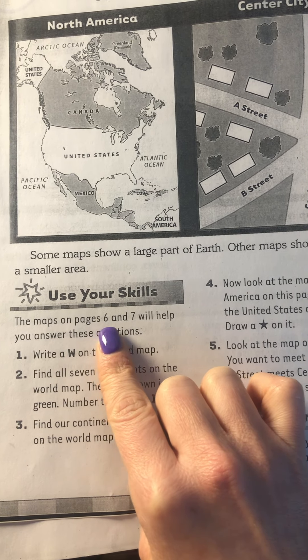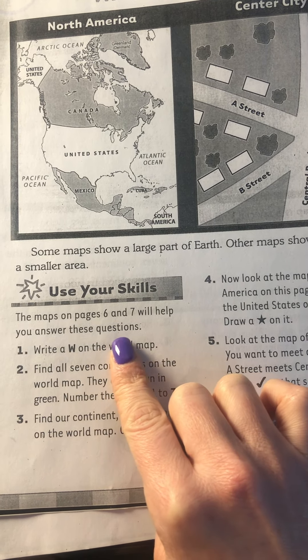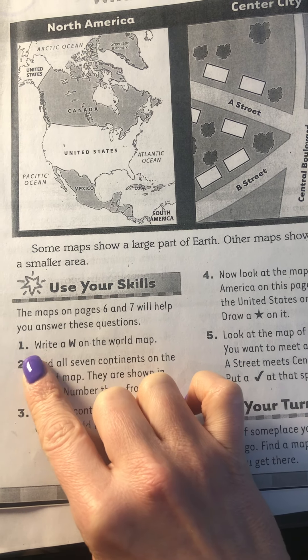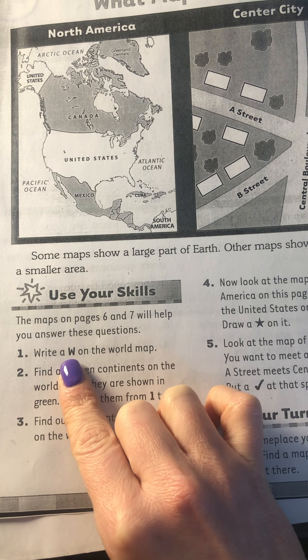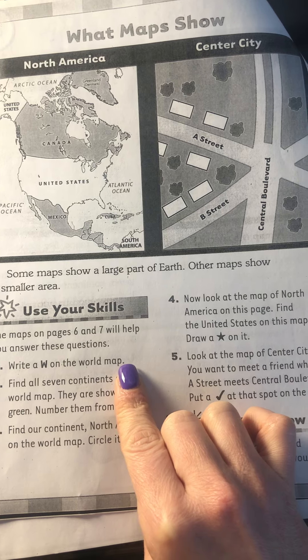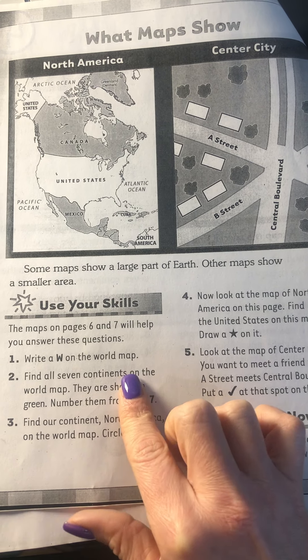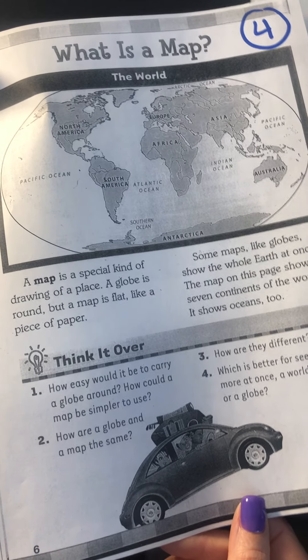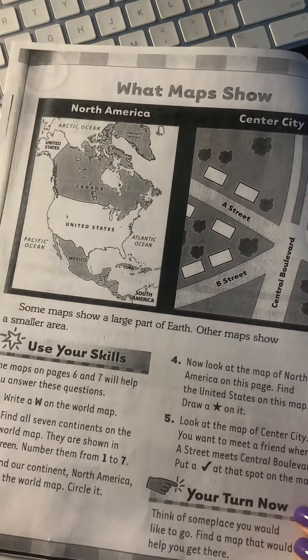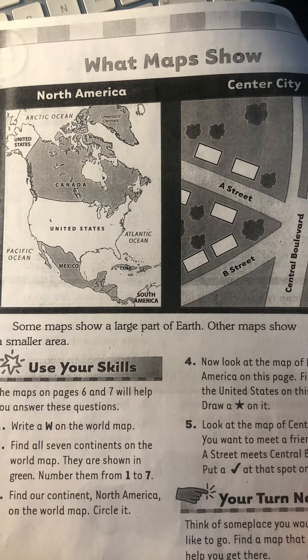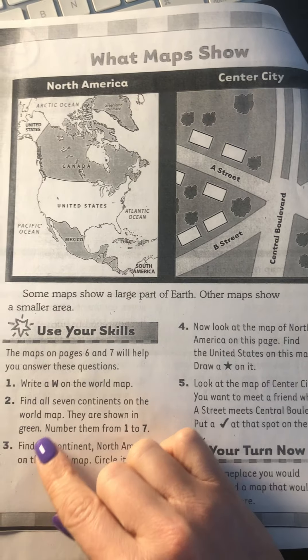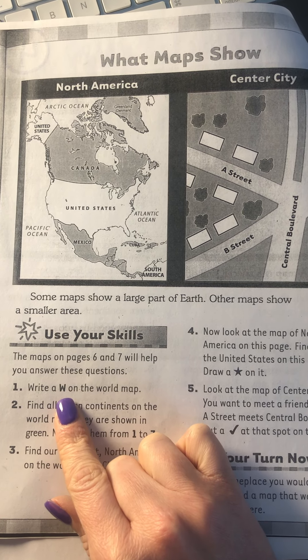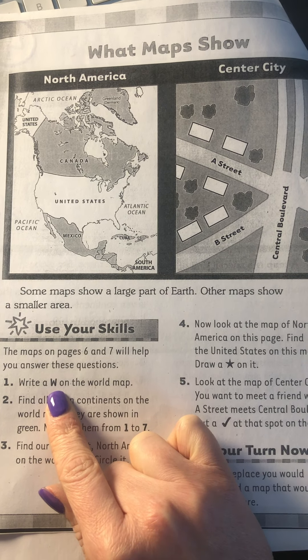The maps on pages six and seven will help you answer these questions. Number one: write a W on the world map. So which one was the world map? Was this the world map, or were one of these the world map? Mark that now — the W. Which one was the world map?